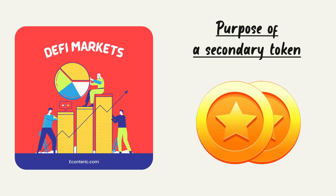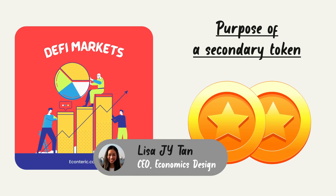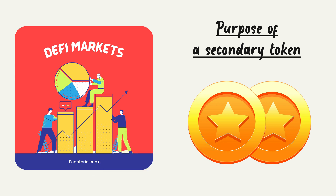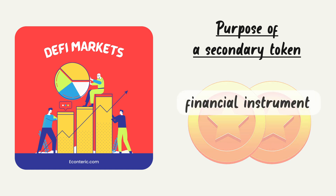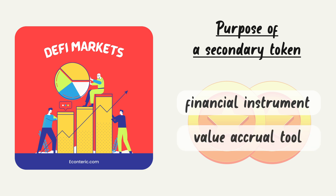Some protocols have dual tokens, some don't — like Ampleforth, they don't have dual tokens. Most of them do have dual tokens. The secondary token has different kinds of functions. There are two primary functions: the first is a financial instrument — think of it as coupons or bonds, like what you get in ESD or DSD. The second type is more of value accrual and value support, like FRAX or Luna, so that if prices fall, the secondary token can support prices.